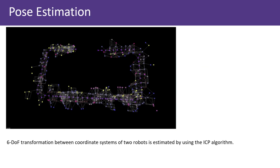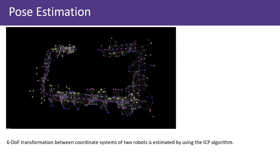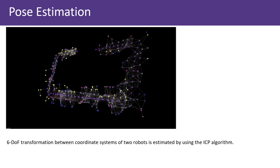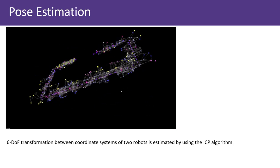Finally, 6 degrees of freedom transformation between coordinate systems of two robots is estimated using the ICP algorithm.